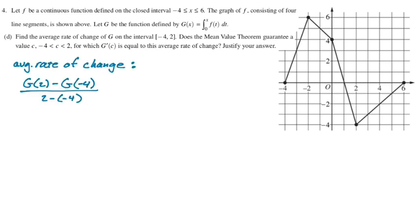Average rate of change is algebra 1 slope, right? So we're doing g of 2 minus g of negative 4 over 6, basically, 2 minus negative 4. So I'm going to write that out using the definition, right? g of 2 is the integral from 0 to 2 of f(t) dt.